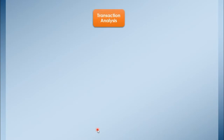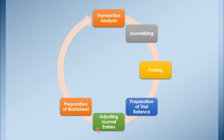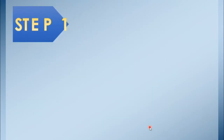From this definition we can get the words recording, classifying, and interpreting. This means that it's done through a process known as the accounting cycle. We have eight steps in the accounting cycle: transaction analysis, journalizing, posting, preparation of trial balance, adjusting journal entries, preparation of worksheet, preparation of financial statements, and closing the books. In this video we are going to discuss the first two steps: transaction analysis and journalizing.